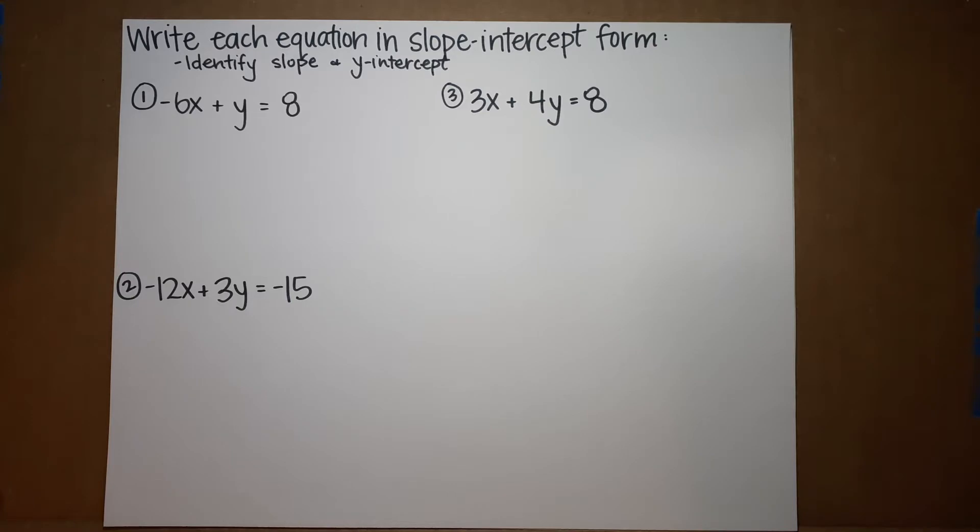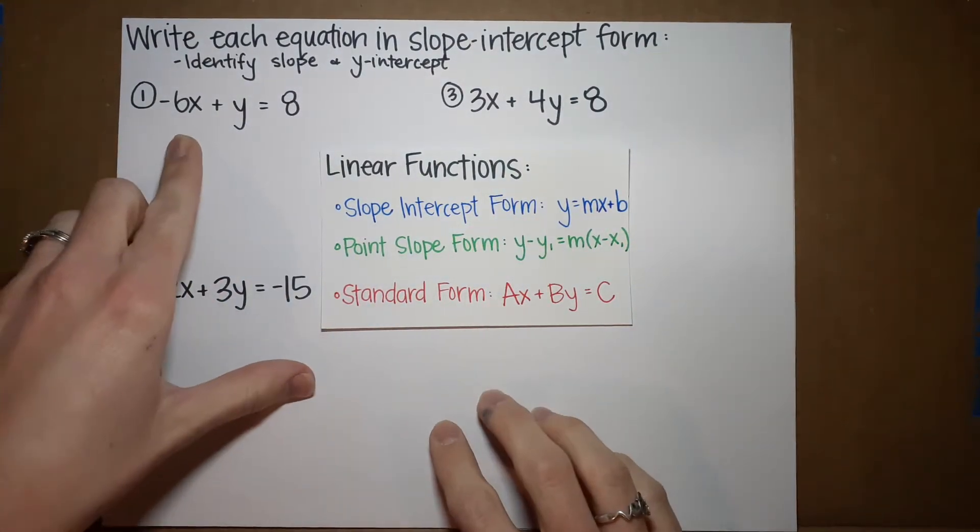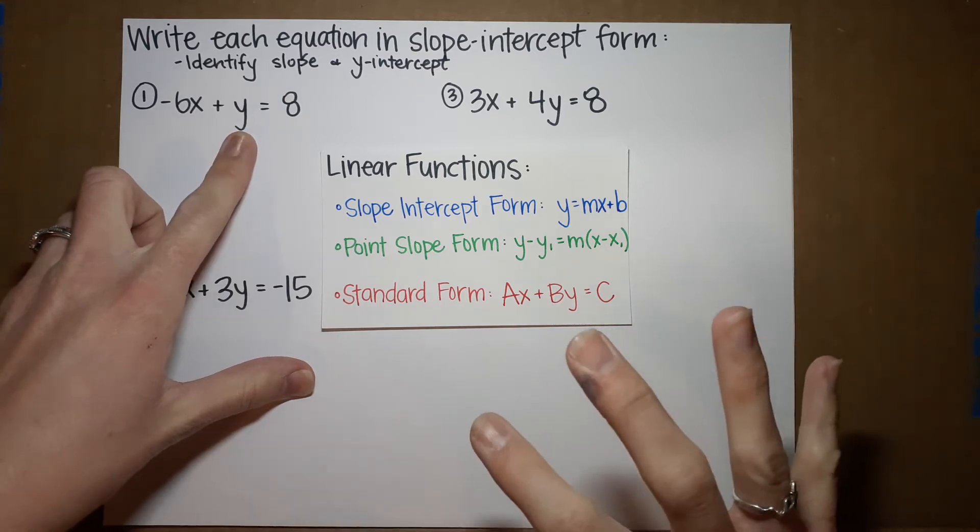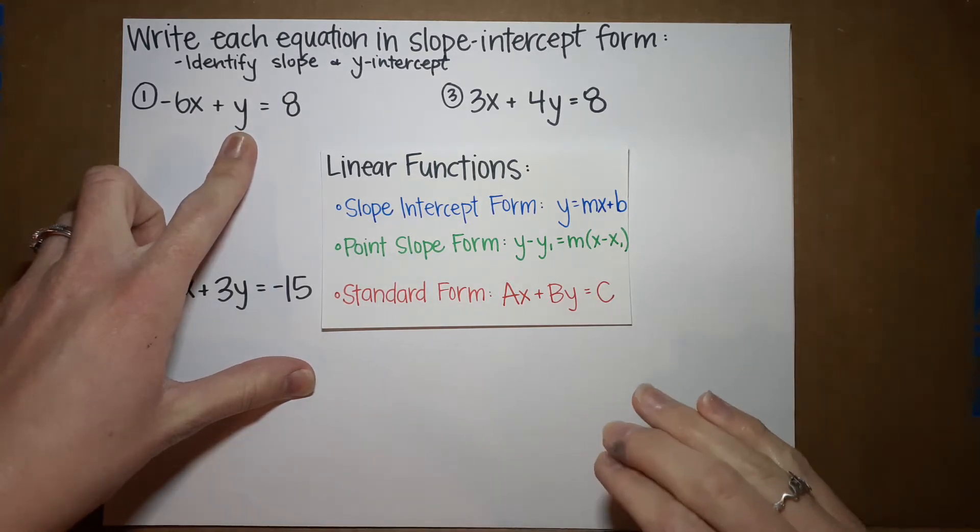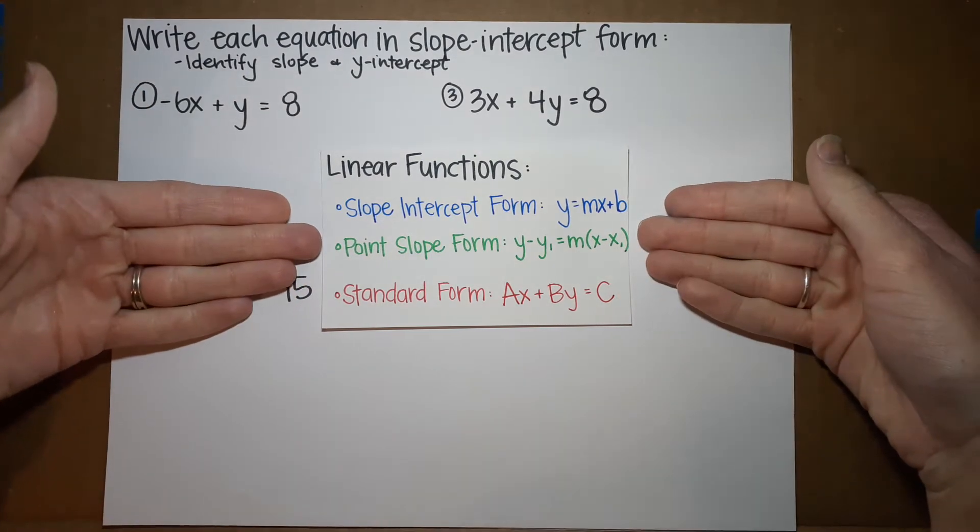First of all, what the crap is slope-intercept form? Super quick review. Don't worry, it won't take long. We are working with linear functions right now. We have an x, we have a y, there's no exponents. These will make a line when you graph them.